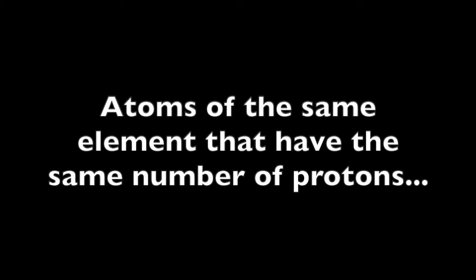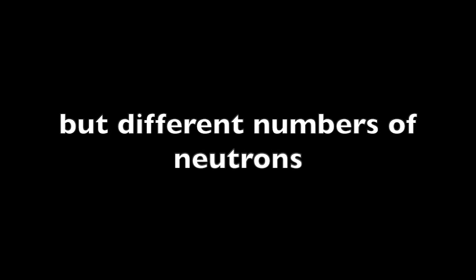However, neutrons and electrons can be added to or removed from an atom without changing the identity of the atom. Isotopes are atoms of the same element that have the same number of protons, but different numbers of neutrons.